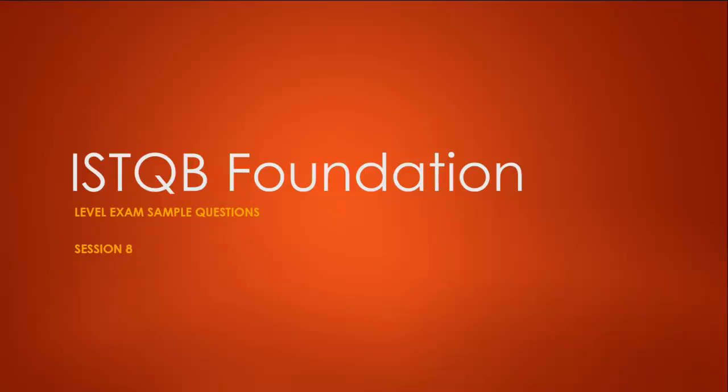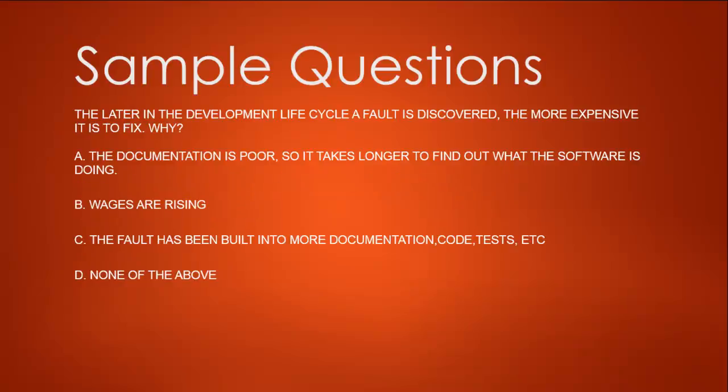Let's start with the first question: the later in the development lifecycle a fault is discovered, the more expensive it is to fix. Why? Option A: the documentation is poor so it takes longer to find out what the software is doing. Option B: wages are rising. Option C: the fault has been built into more documentation, code, tests, etc. Option D: none of the above.